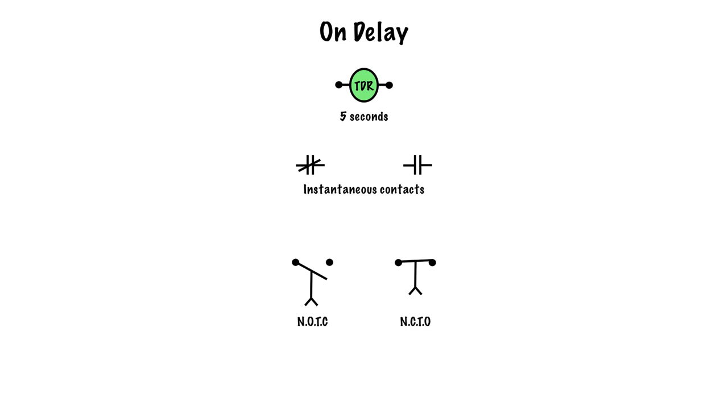What happens though is this coil is energized, but this normally open time to close stays open, and this normally closed time to open stays closed. They hold in those positions until the relay times out. So it counts to 5: 1, 2, 3, 4, 5, and then this will close and this will open. After 5 seconds, this becomes closed, this becomes open.